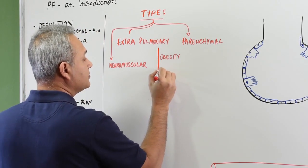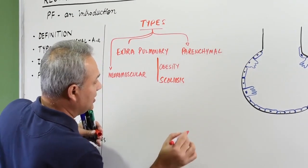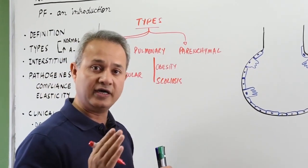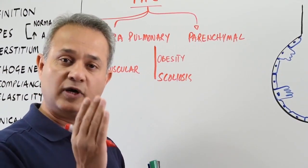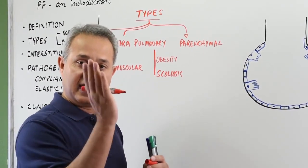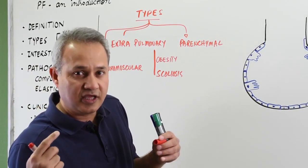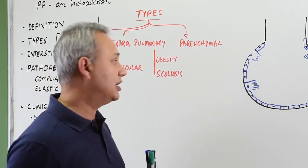Similarly, scoliosis, which is the sidewide angulation of the spinal cord, and that causes restriction in the pulmonary or chest movement as well.